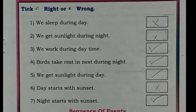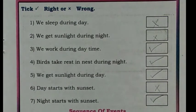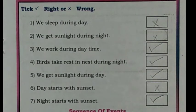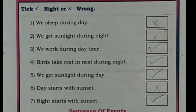Children, let us pick right or wrong. We sleep during day — Wrong. We get sunlight during night — Wrong. We work during day time — Right. Birds take rest in nest during night — Right. We get sunlight during day — Right. Day starts with sunset — Wrong. Night starts with sunset — Right.